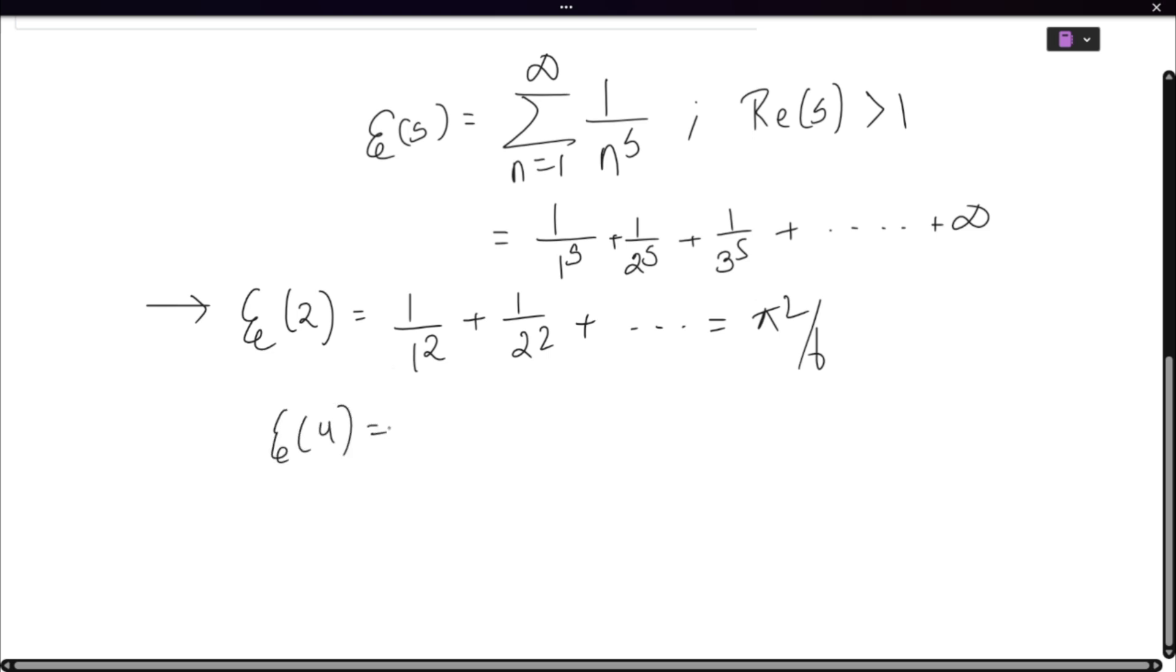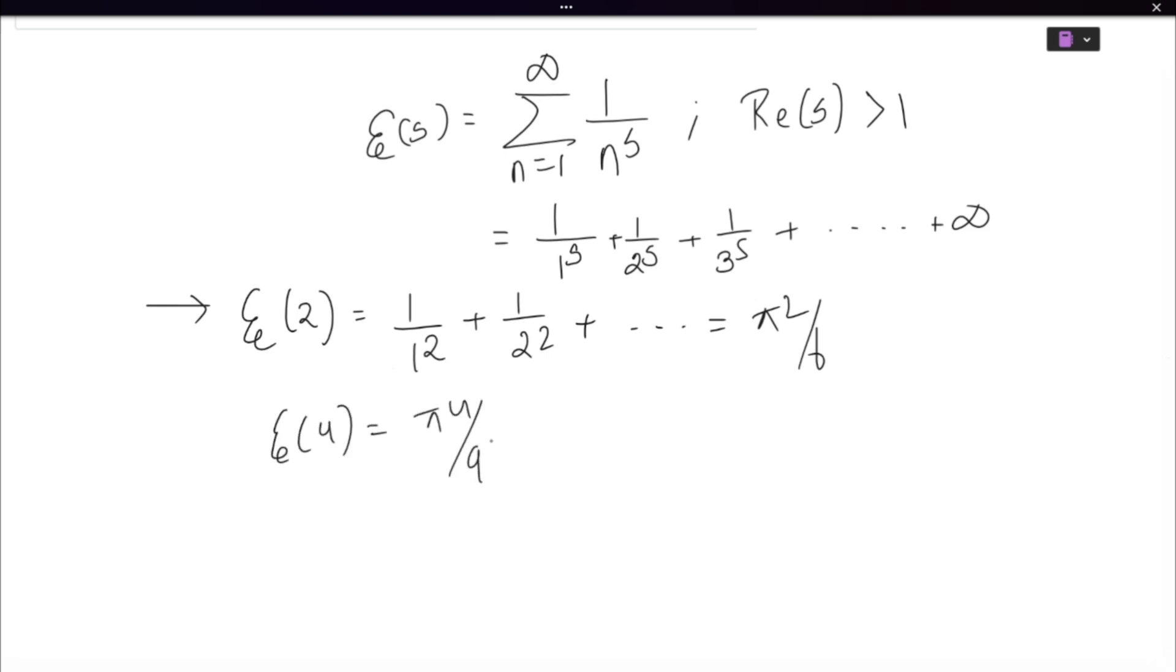Zeta of 4 is pi to the power 4 upon 90. Zeta of 6 is nothing but pi to the power 6 by 945 if I remember, and zeta of 8 is around pi to the power 8 upon 9450, and so forth it goes. And further values you can express in terms of Bernoulli numbers.